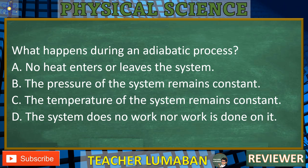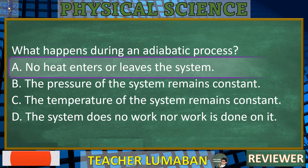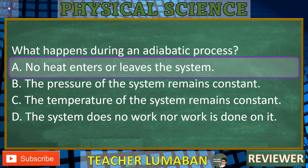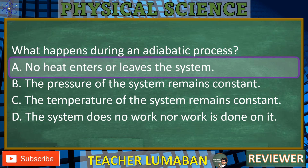During an adiabatic process, there is no heat transfer into or out of the system, meaning the system is thermally insulated from its surroundings. The correct answer is A. No heat enters or leaves the system. In an adiabatic process, the key characteristic is that the system does not exchange heat with its surroundings. This can occur when a system is perfectly insulated, or when the process happens so quickly that there is no time for heat transfer. As a result, all changes in the system's internal energy come from work done by or on the system, not from heat exchange.